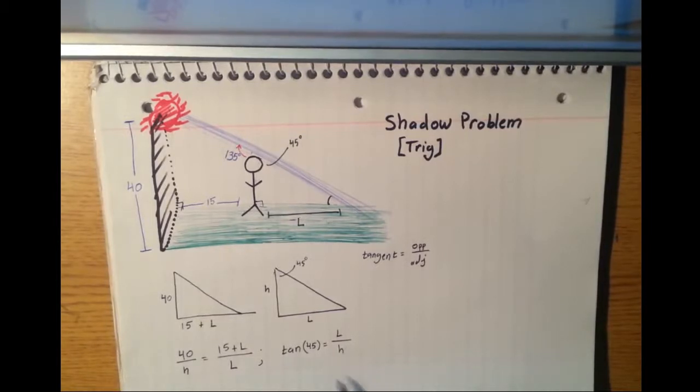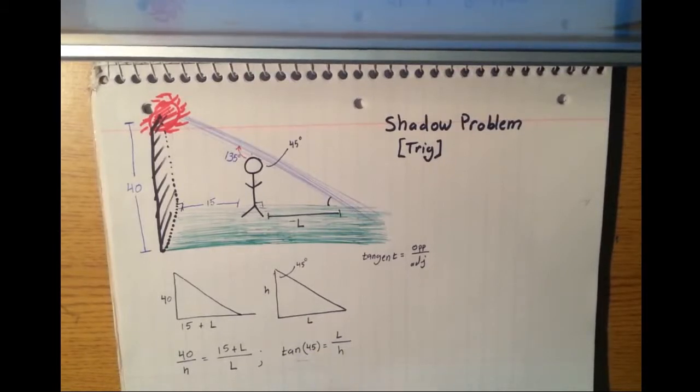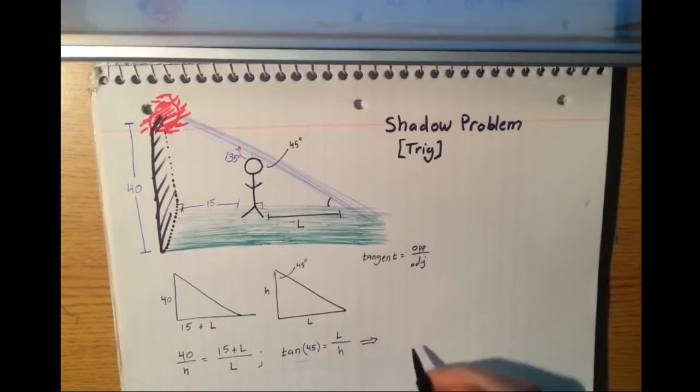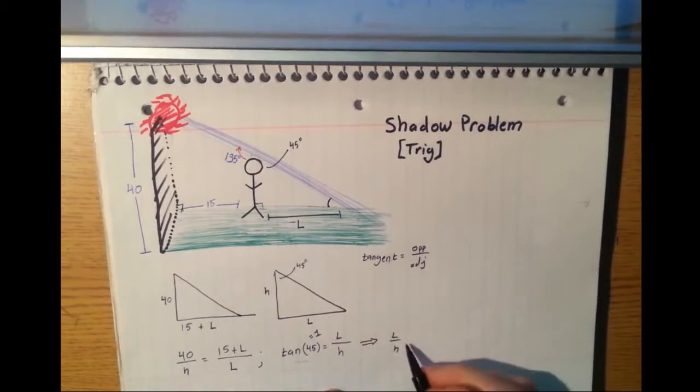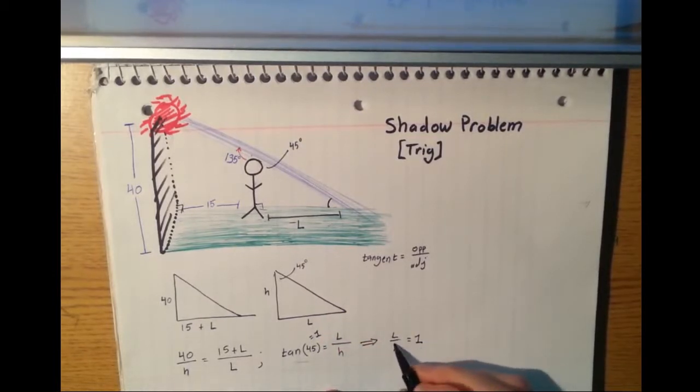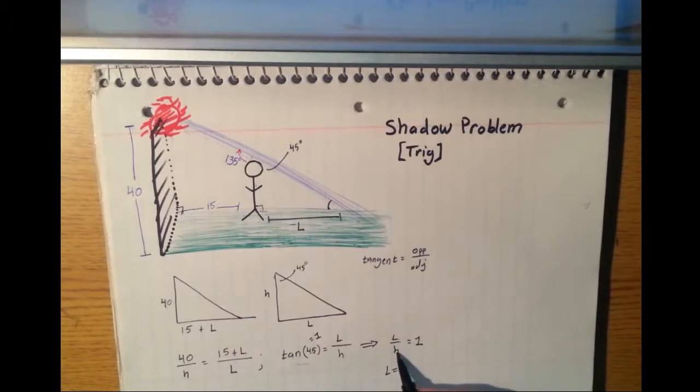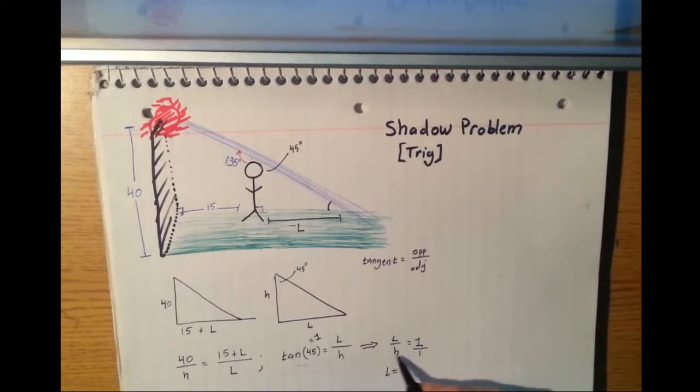Now, if we plug in tangent of 45 into our calculator, we're going to see that it is in fact one. So we can see that L over H equals one. So that means that L equals H. You can see that here because anything divided by itself has to equal one, or I can write this as a fraction over one and then cross multiply. You're going to get L to equal H.